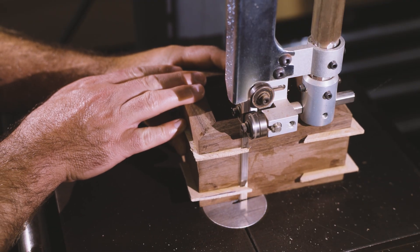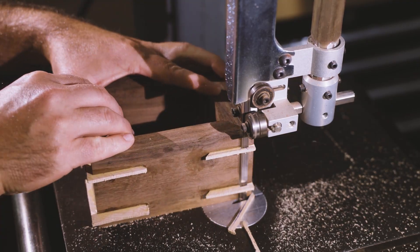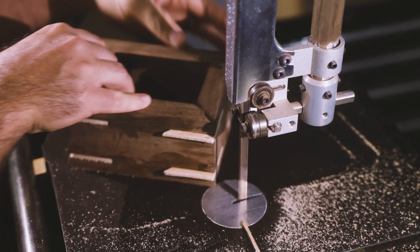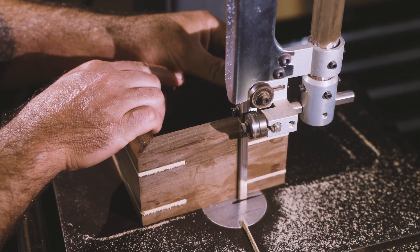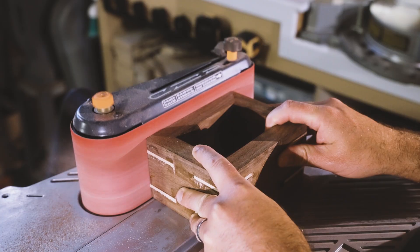I like to cut off the overhanging keys on the bandsaw first, and then flatten the sides on my oscillating belt sander.